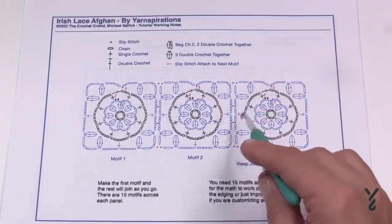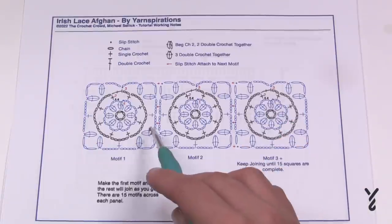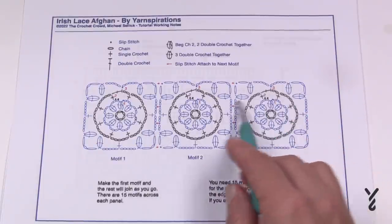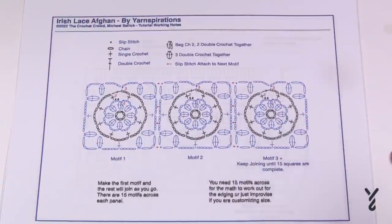So this particular mathematic count works on the 15 that are going across. So if you're going to change the number of motifs it will probably impact the counting of your stitches in the next row. So just make sure that you keep that in mind.